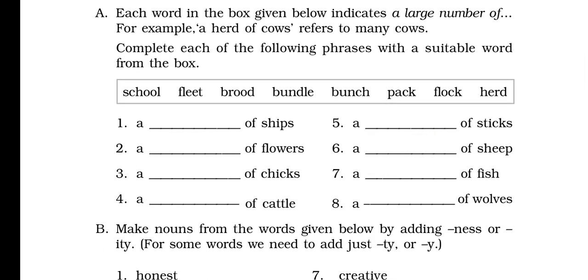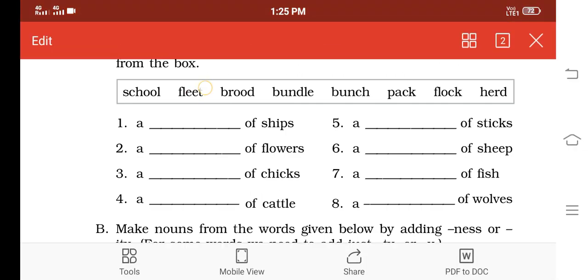The first one is given: a collection of ships. You have to write there 'a fleet of ships.' Then the second one: flowers. You have to write 'a bunch of flowers.'